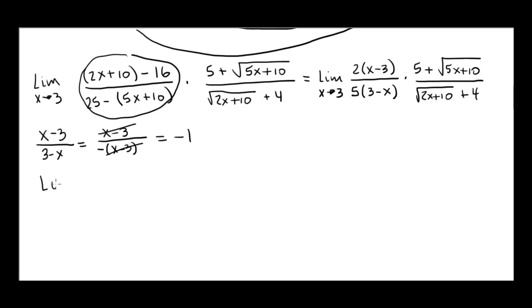So here is what we are left to evaluate. Limit x approaches 3. We had 2 divided by 5 and then x minus 3 times 3 minus x. That's minus 2 fifths times 5 plus the square root of 5x plus 10 divided by the square root of 2x plus 10 plus 4.